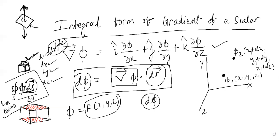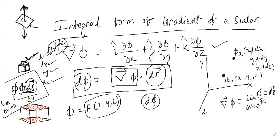Therefore, del phi can be written as the limit as del v tends to zero of the closed surface integral of phi ds divided by the elemental volume del v. This is how we represent the gradient of a scalar in integral form.